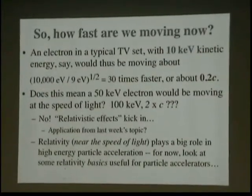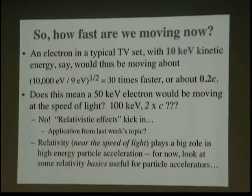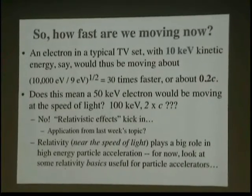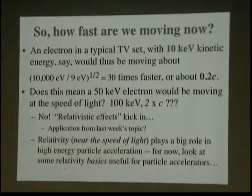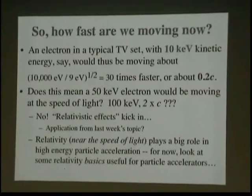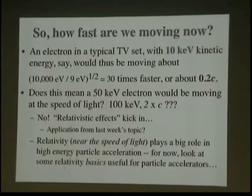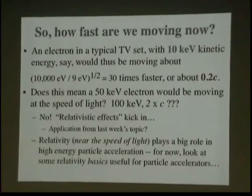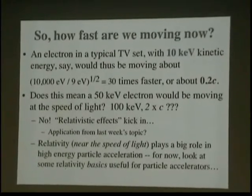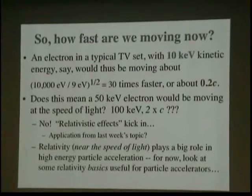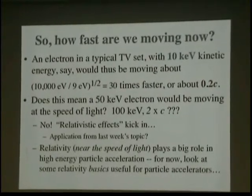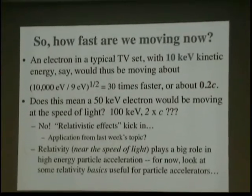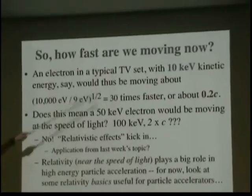So, how fast are we moving now if we have an electron coming off of the cathode on the TV and hitting the screen? Well, like we said, an electron in a typical TV set has an energy of about 10,010 kEV. If you do the math, that's about 30 times faster than our previous example with the 9 electron volt electron. It's about 2 tenths of the speed of light. So, let's do some math.